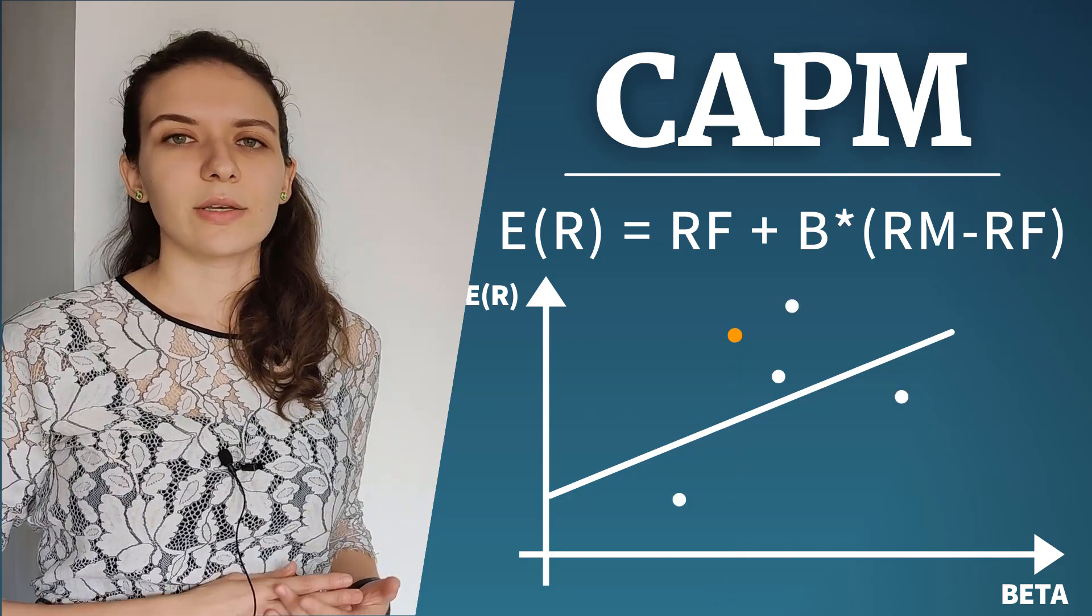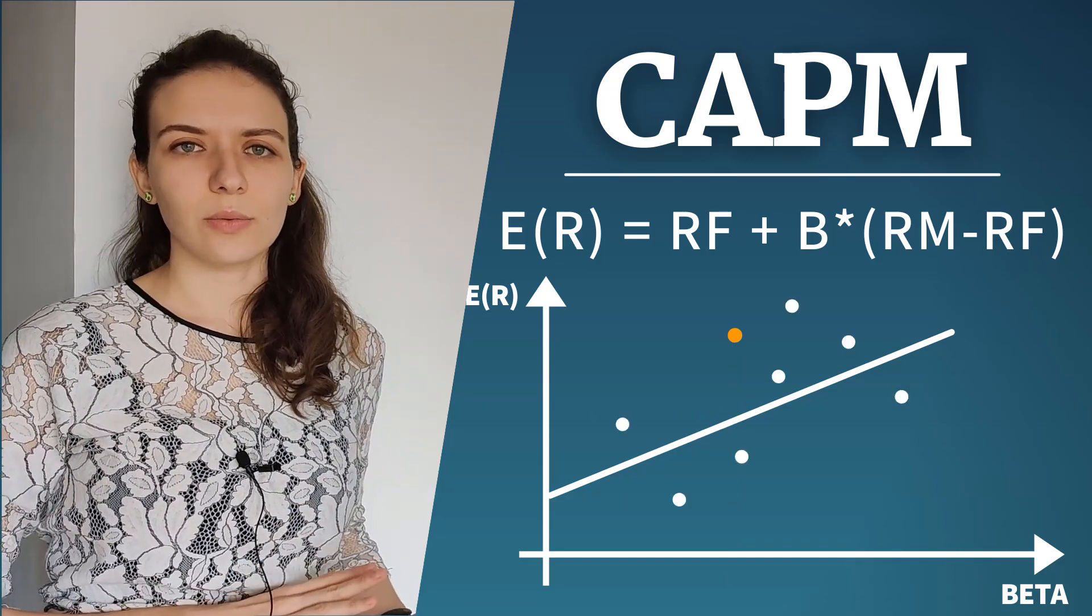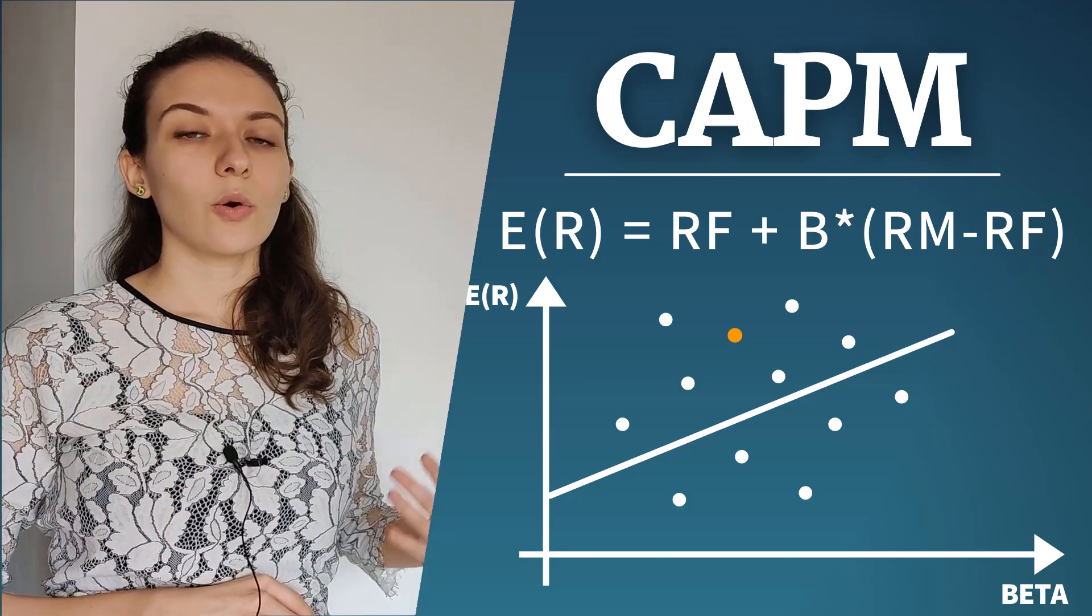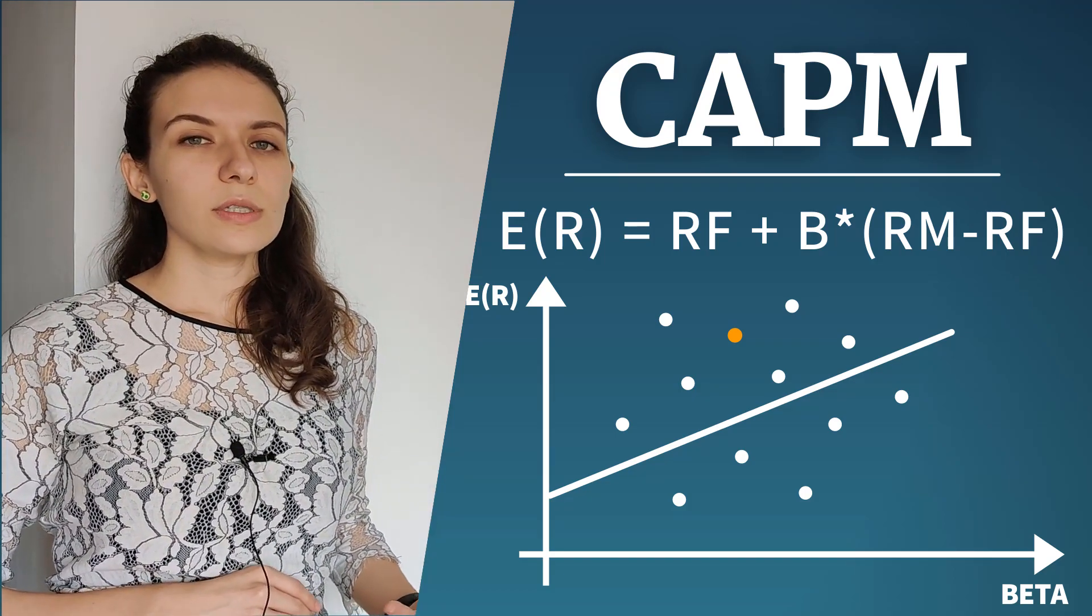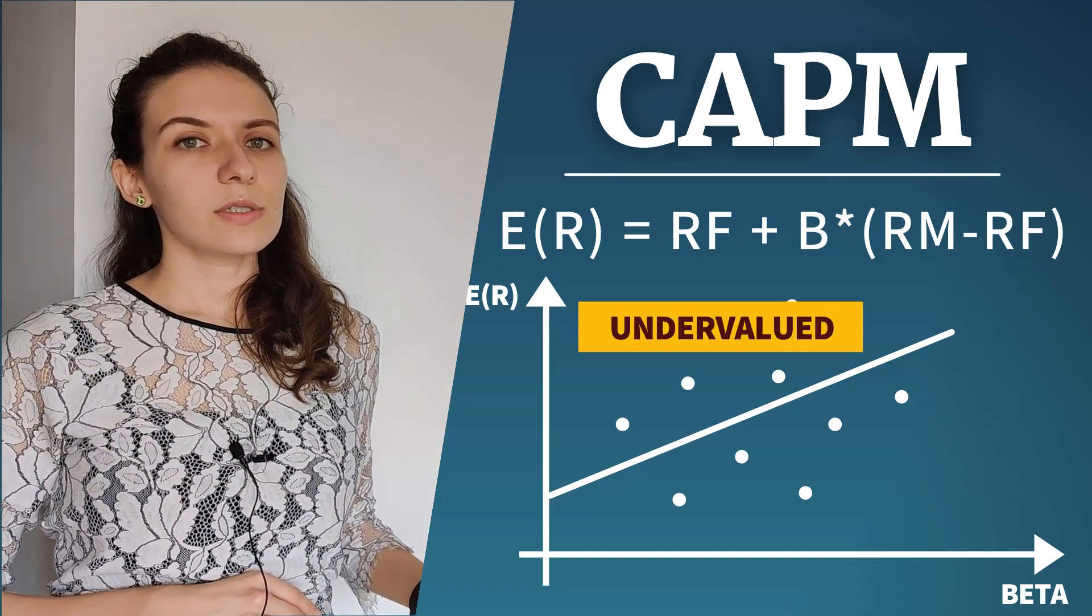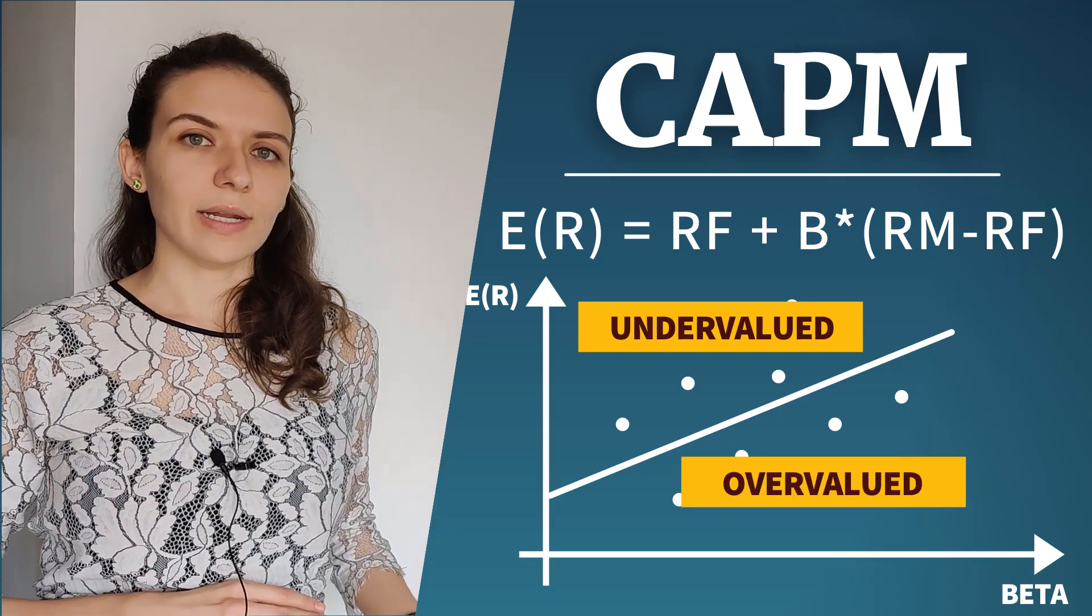So we can go back to the security market line and plot all the stocks in the world into this space and see whether they fall above the line or under the line. All the stocks which are above the line are undervalued and all the stocks which are beneath the line are overvalued.